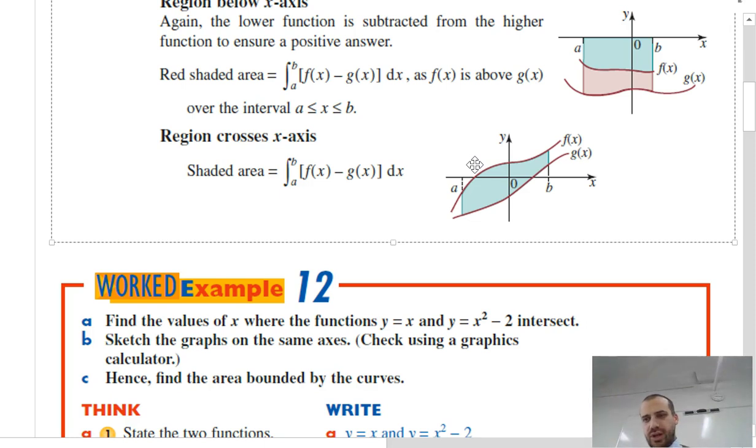it's subtracted from the function that's above. So as long as you remember that g of x is the lower function, then it's always going to be f of x minus g of x, the integral between those two.